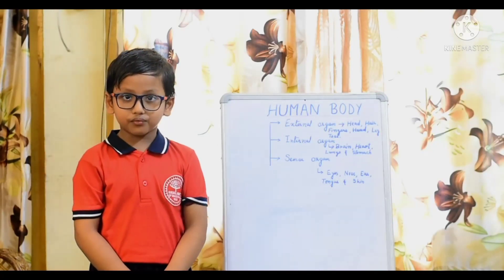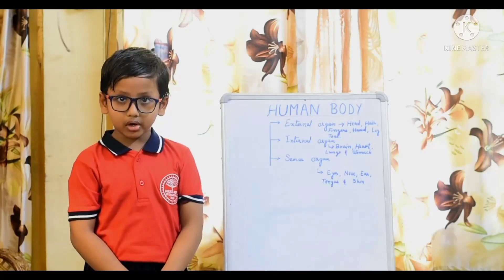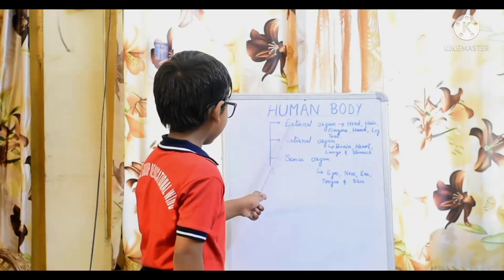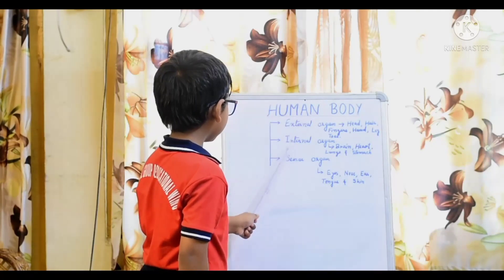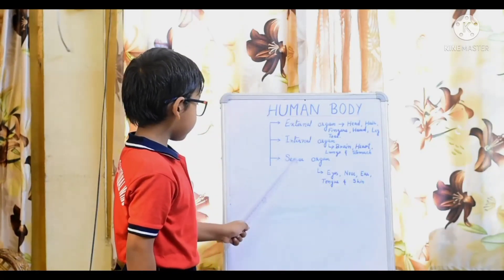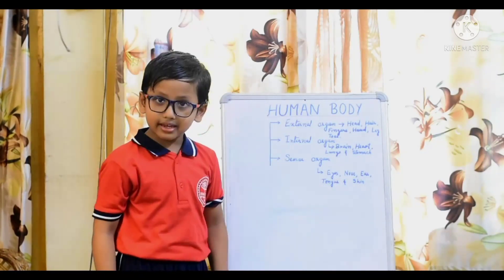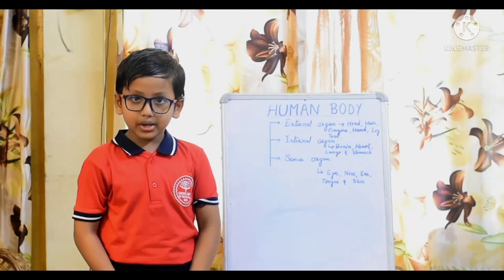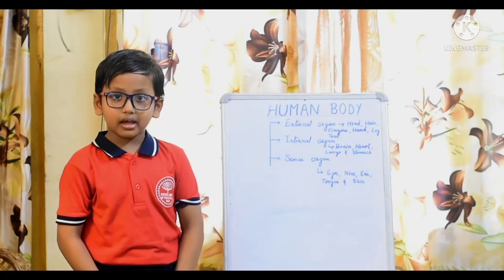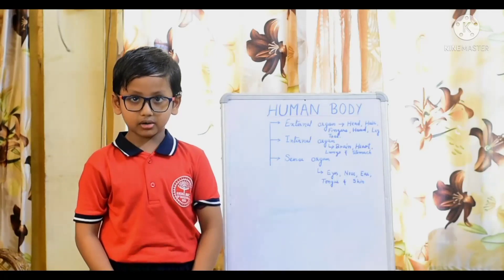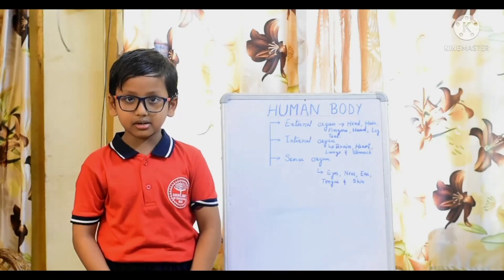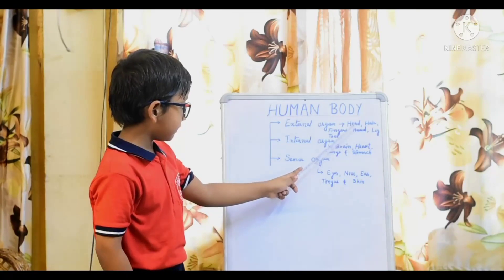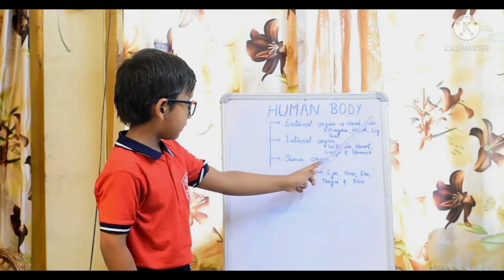We have different types of organs. They are external organs, internal organs and sense organs. The organs which we can see outside our body are called external organs. For example, brain.